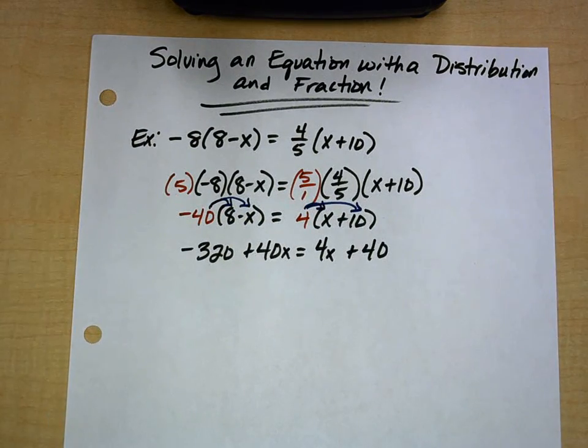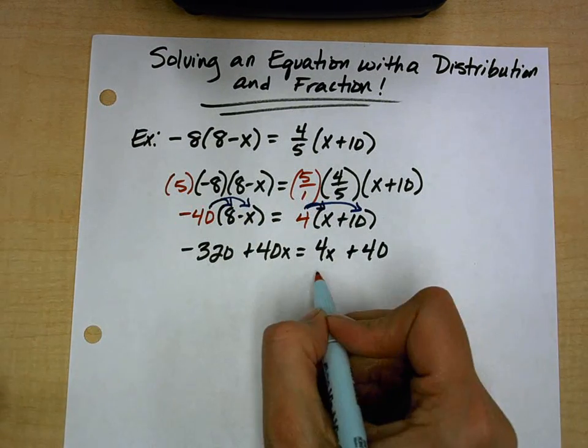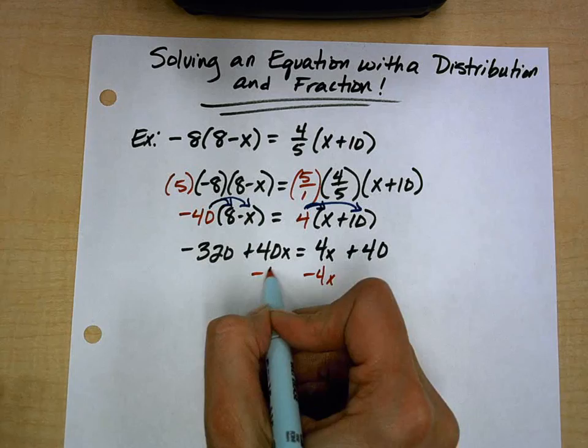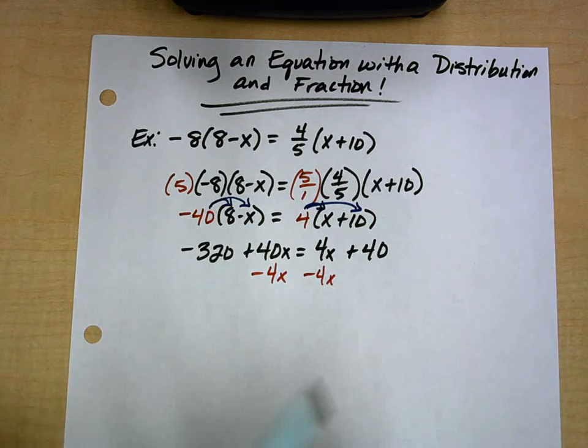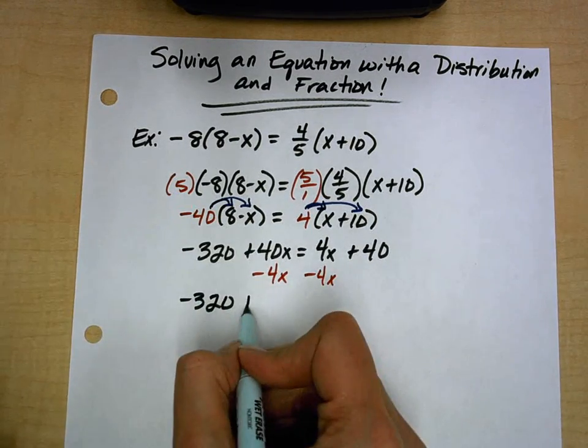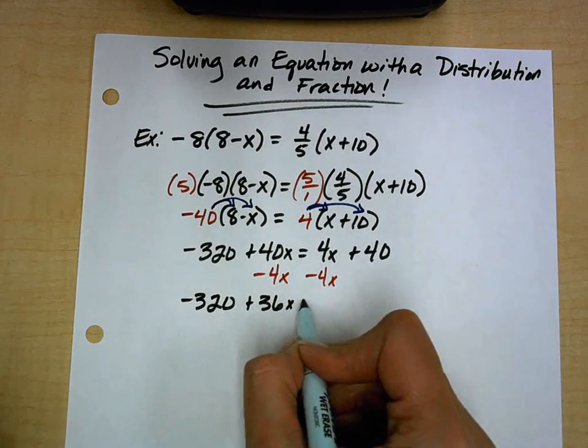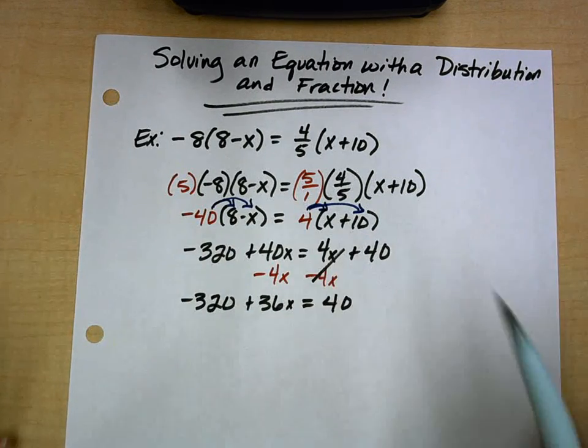I have variables on both sides of the equation, so I'm going to subtract 4x from both sides so that I can get them all on the same side of the equal sign. These cancel.